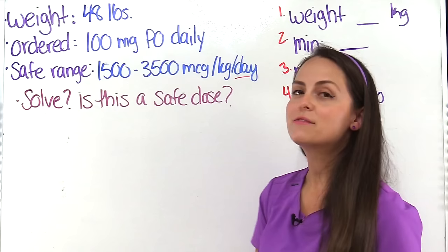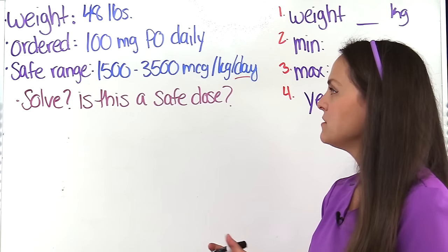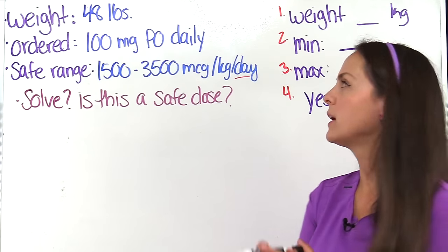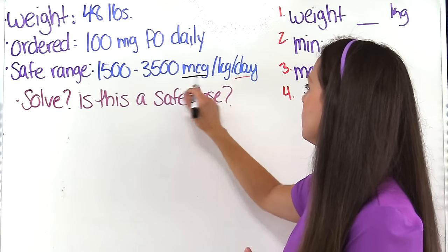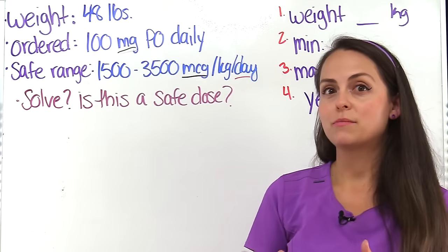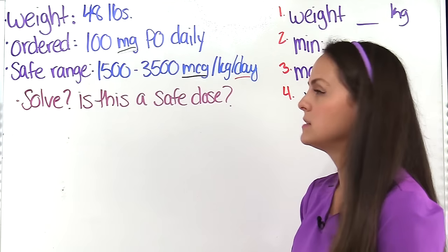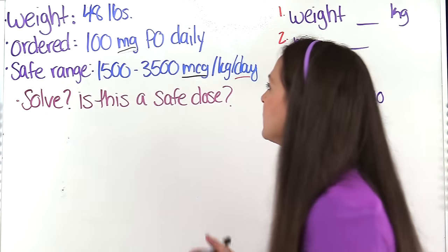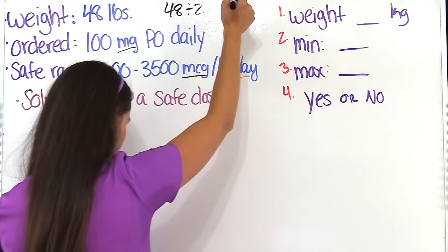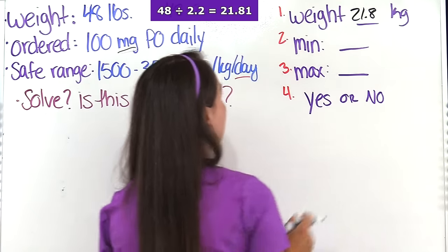The third problem says we have a child who weighs 48 pounds and the physician ordered 100 milligrams by mouth daily. The safe dose range for this medication is 1,500 to 3,500 micrograms per kilogram per day. The safe dose range is in micrograms but what was ordered is in milligrams, so we'll need to do some converting. We convert the weight: 48 divided by 2.2 gives 21.81 repeating, rounded to 21.8 kilograms.